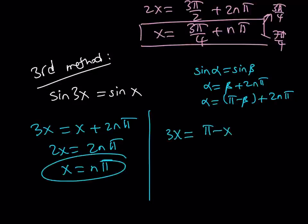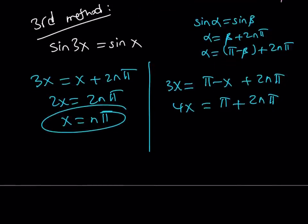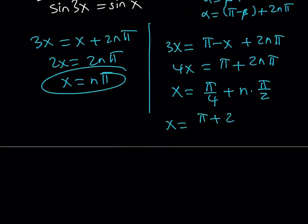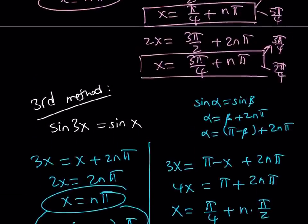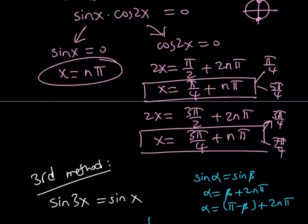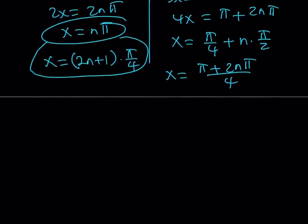Or, 3x can be written as pi minus x plus 2n pi. Put the x's on the same side, and something interesting is going to happen. I'm going to show you a more compact way to express the second set of solutions. x equals pi over 4 plus, now, if you divide both sides by 4, you get n times pi over 2. If you make a common denominator, you get pi plus 2n pi divided by 4. By factoring out the pi here, you can basically write the second set of solutions as 2n plus 1 multiplied by pi over 4, which indicates the odd multiples of pi over 4 are also solutions. As before, we talked about pi over 4, 3 pi over 4, 5 pi over 4, and 7 pi over 4. You can express this in a much more compact way.